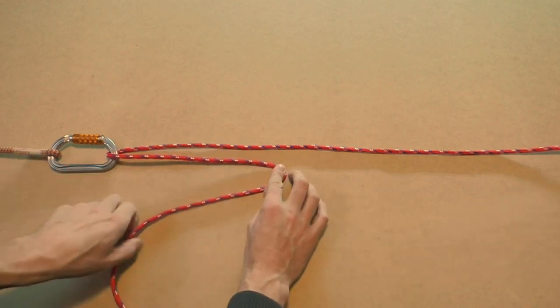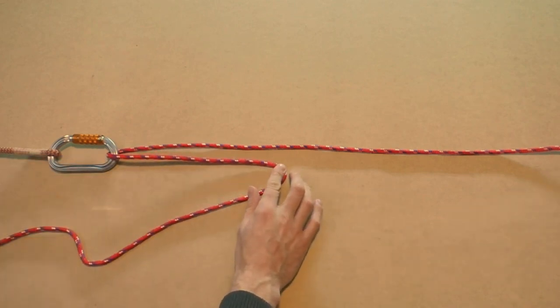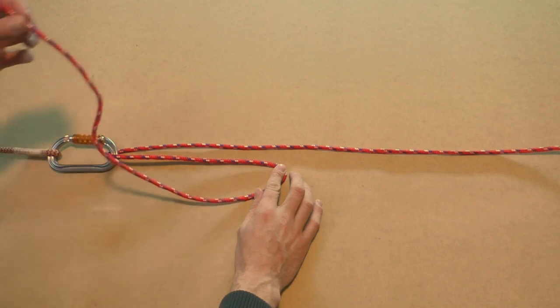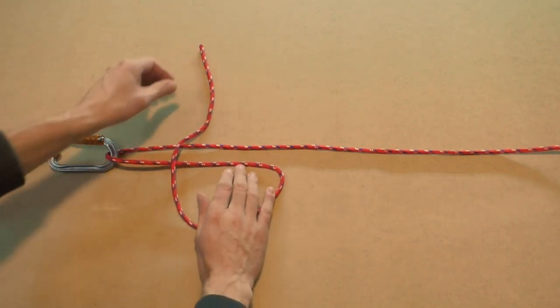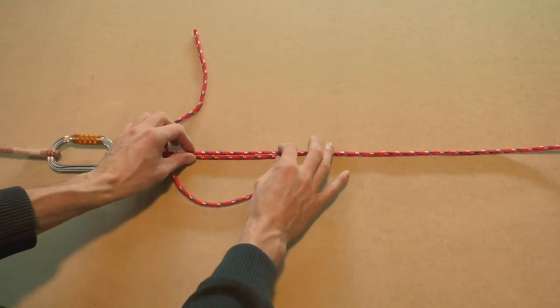First form a bite. Then we take the working end and bring it over the standing part of the knot. This transforms the bite into a loop.